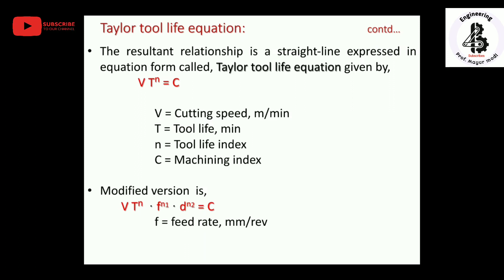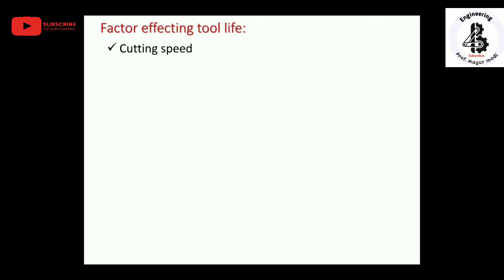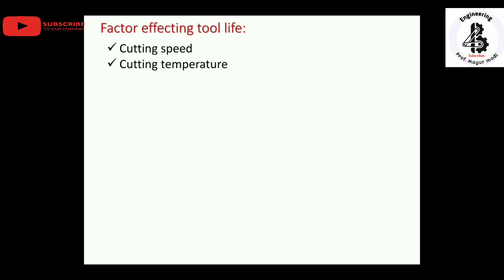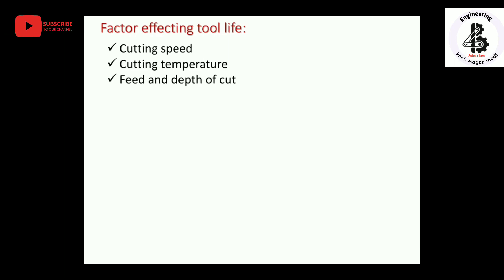Different factors affecting tool life: the most responsible parameter is cutting speed — increasing speed definitely reduces tool life. Cutting temperature is also a factor; increasing speed or depth of cut increases the temperature at the interface of the tool and workpiece, making it a responsible parameter. Feed rate (in mm/rev) and depth of cut (in mm) also affect tool life.